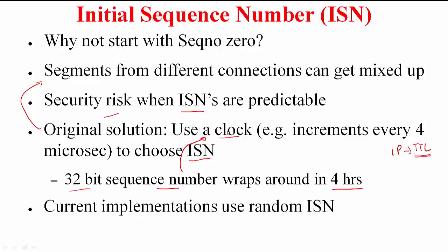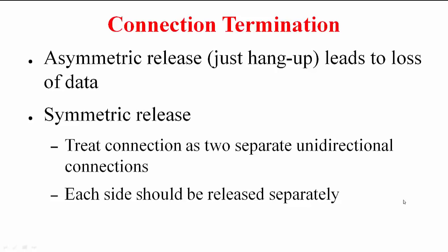But then these predictable initial sequence numbers were being used to launch security attacks. I will cover a little bit more of this as part of the quizzes, but the point to note is that this wasn't considered safe. Current implementations use random initial sequence numbers to circumvent the security threat. This is with connection establishment, so what do you think of connection termination? You think this is easy?